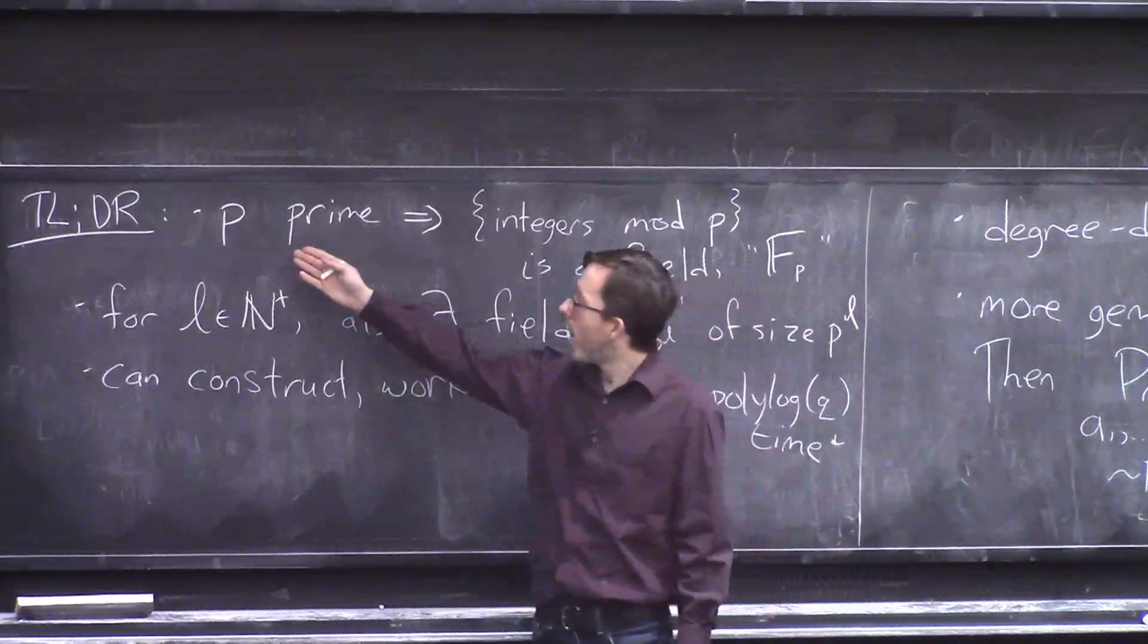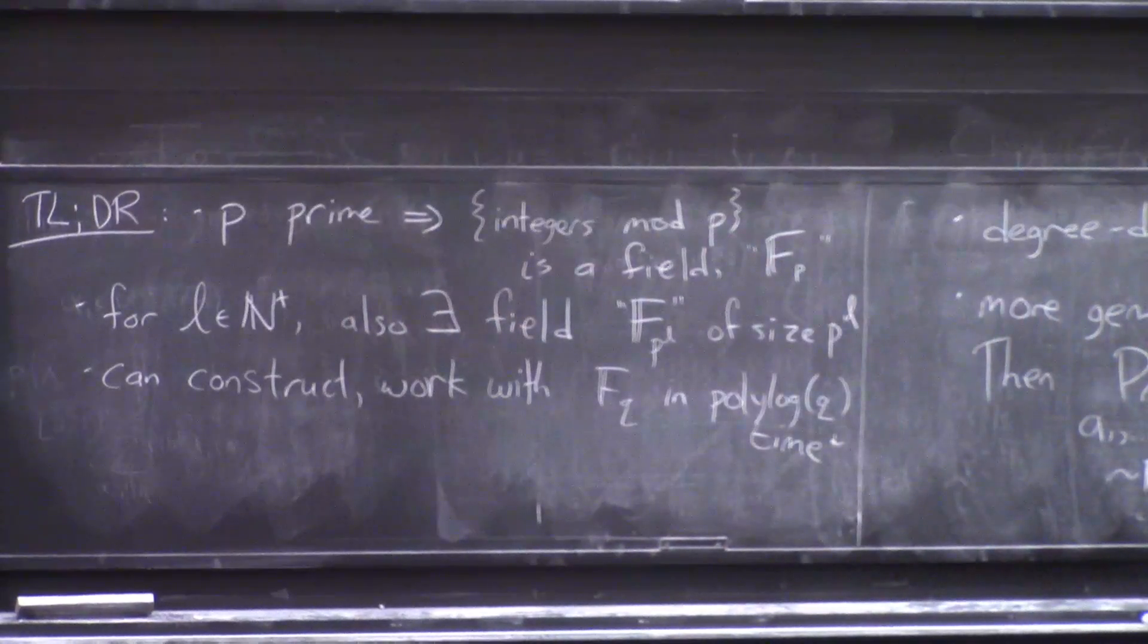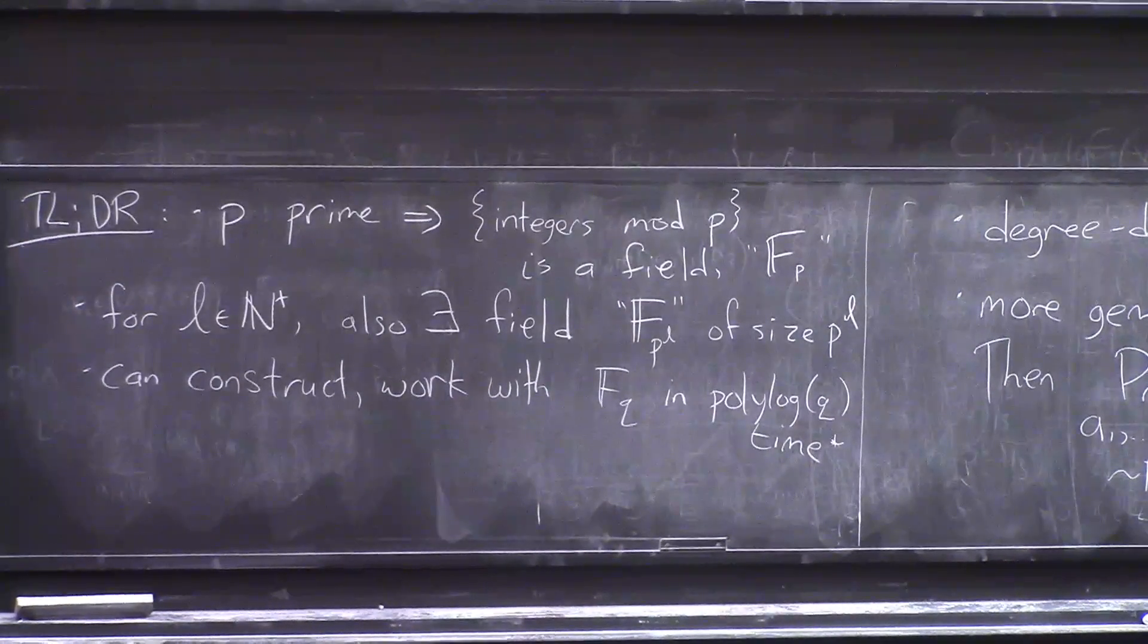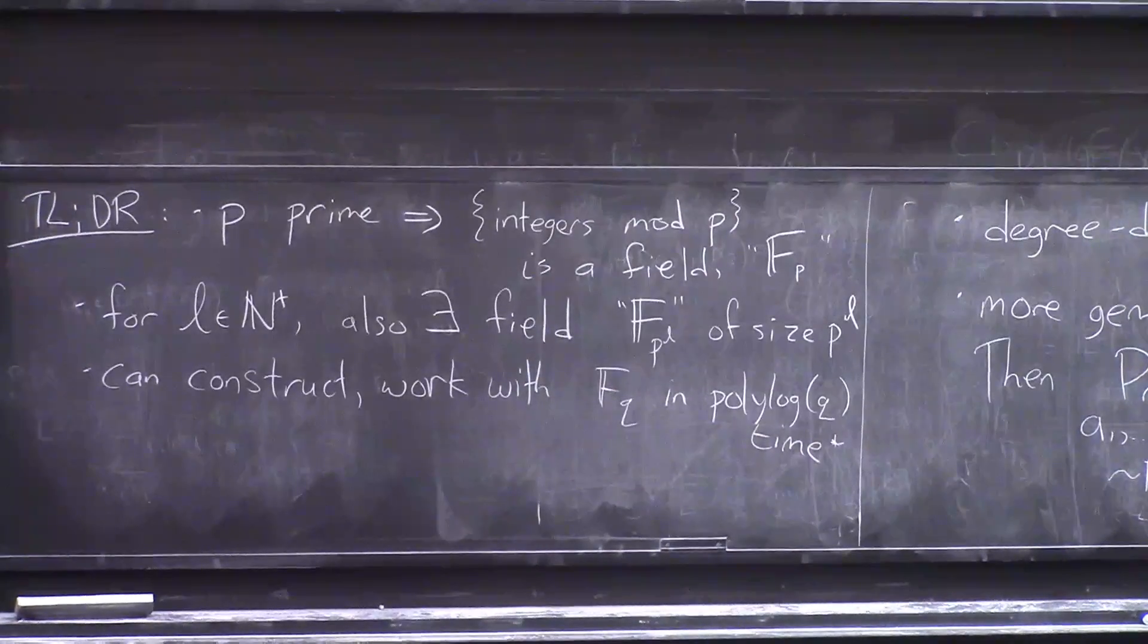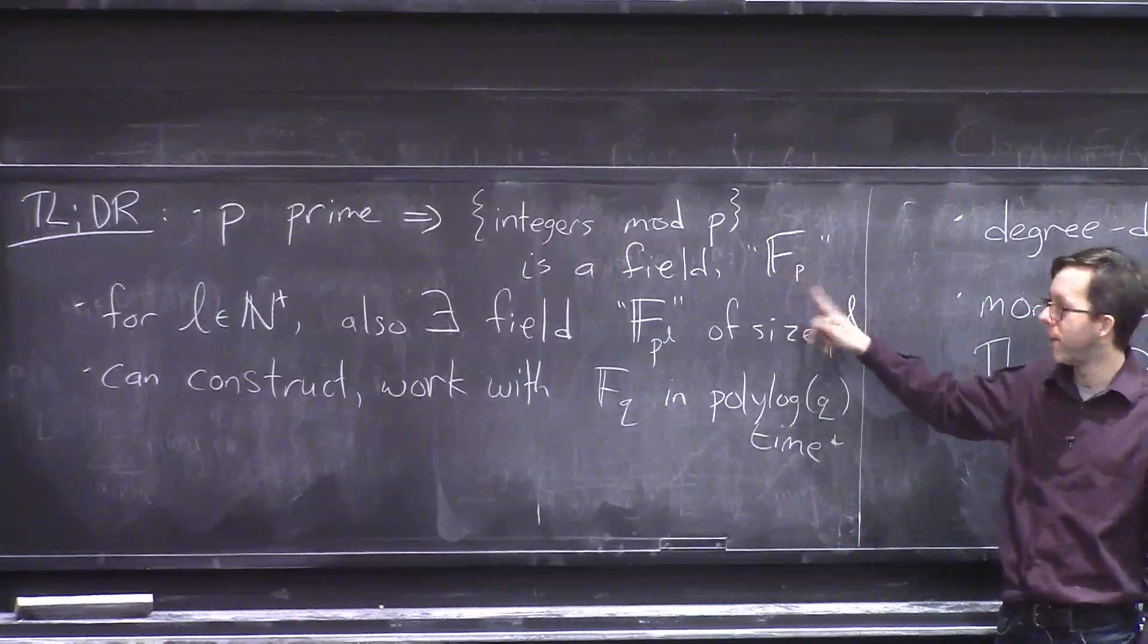First fact is that if you have a prime number p and you look at the integers modulo p, then this is a field. The main trick here being the fact that there is division here. This set of integers is closed under division or reciprocals, and this is usually written like boldface or double-struck F sub p.